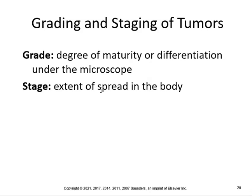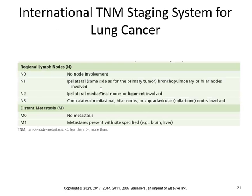Grade is the degree of maturity or differentiation under the microscope; stage is the extent of spread — make sure you know the stages. In the international staging system for lung cancer: N0 means no nodal involvement, N1 is ipsilateral, N2 is ipsilateral mediastinal nodes, N3 is contralateral mediastinal. For distant metastasis: M0 means no metastasis, M1 means metastasis is present. TNM stands for tumor, node, metastasis.